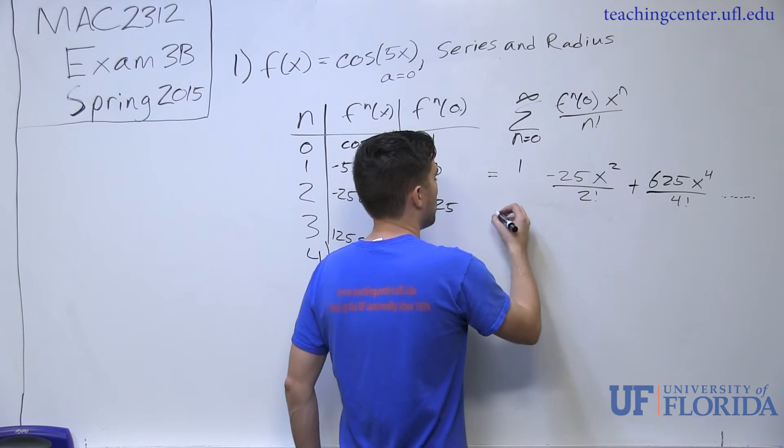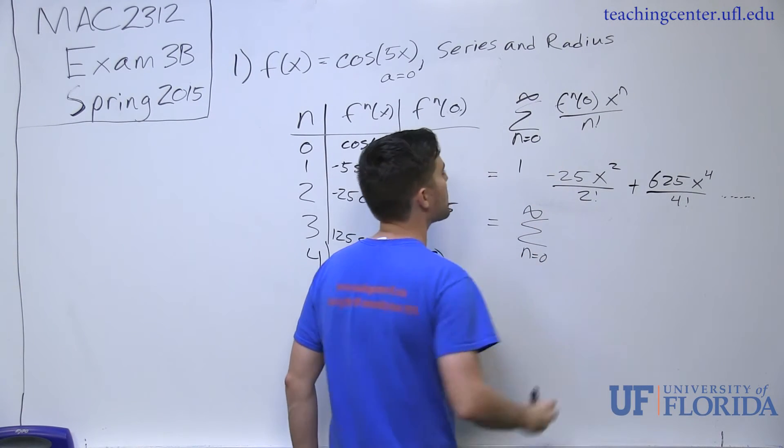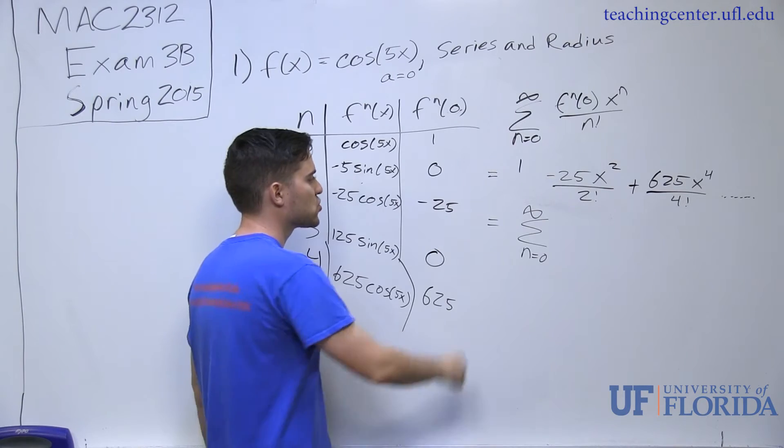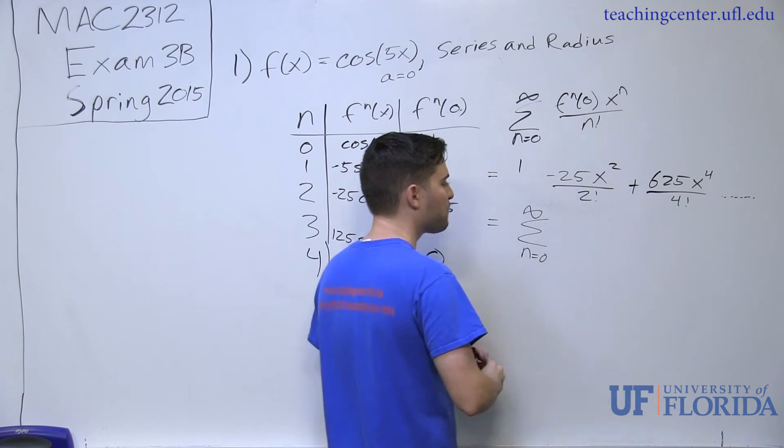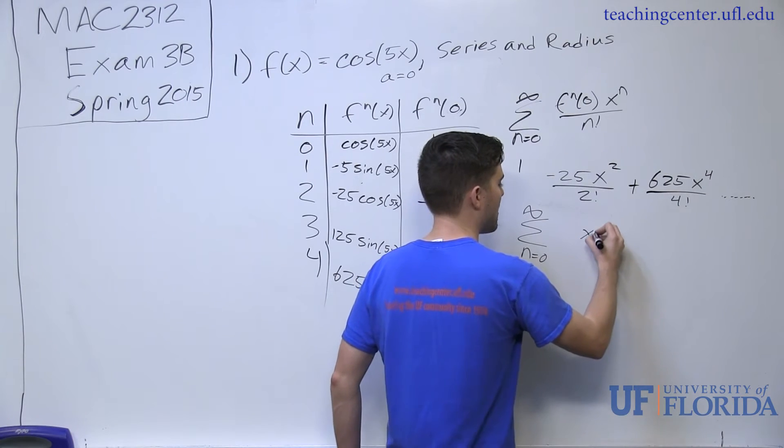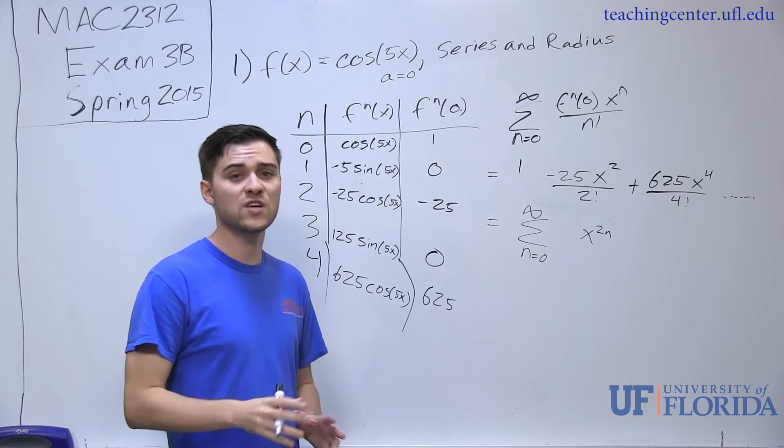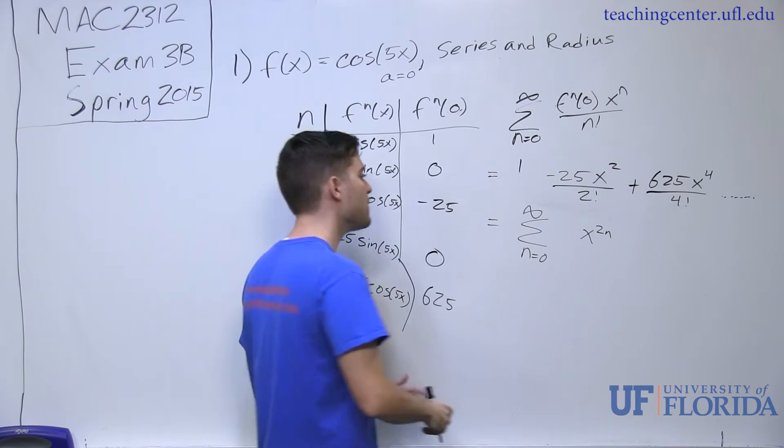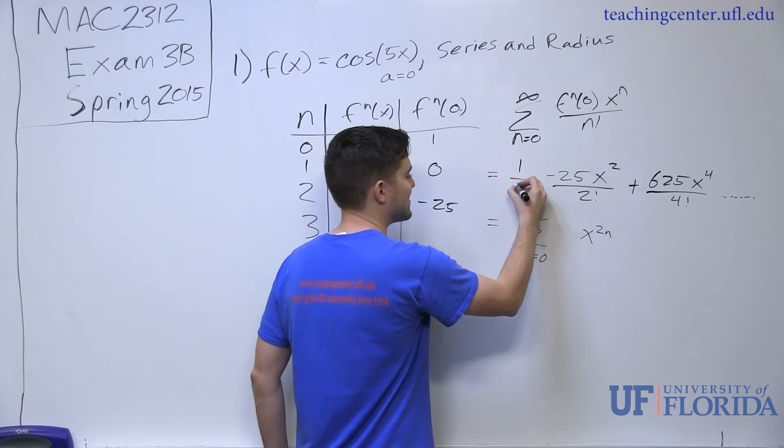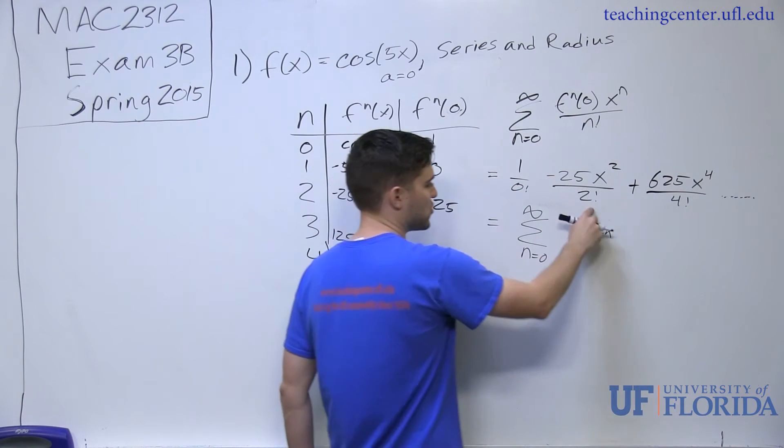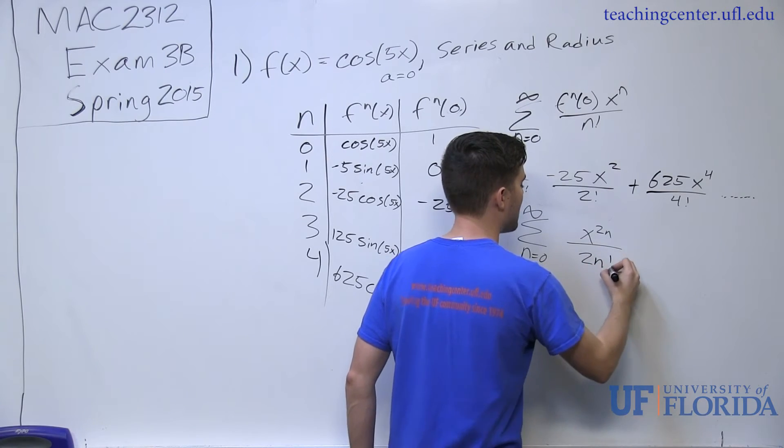If I look at the overall term, I want to write this series in terms of its own Maclaurin expansion. I note that my x powers are growing by a factor of two, so that tells me that I have an x to the 2n term in there, which makes sense because cosine of x also has an x to the 2n term. I have a 2n factorial on the bottom. This would be zero factorial, this is two factorial, this is four factorial. So I am going to divide by 2n factorial.